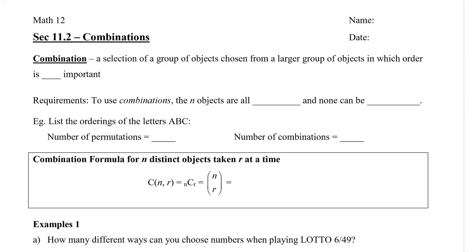In this video, I'm going to show you what it means to take a combination of a group of objects and show you the combination formula and how it's related to the permutation formula. A combination is a selection of a group of objects chosen from a larger group of objects in which order is not important. The requirements to use combinations are that the n objects have to all be different and none can be repeated.